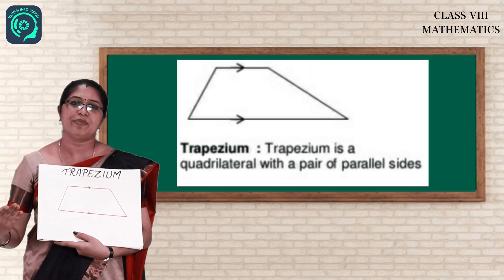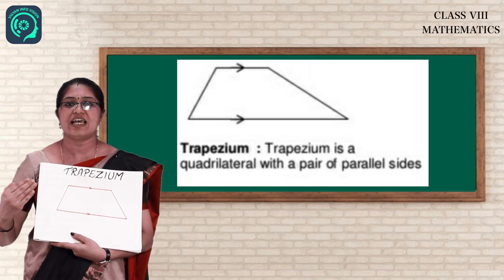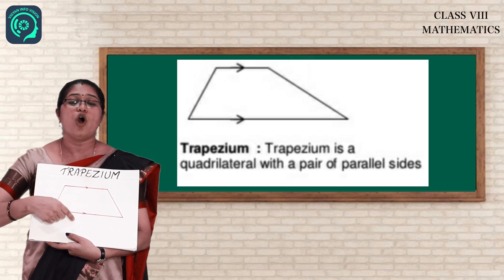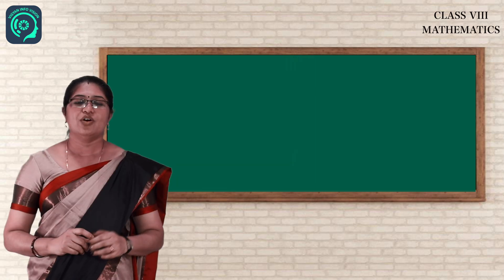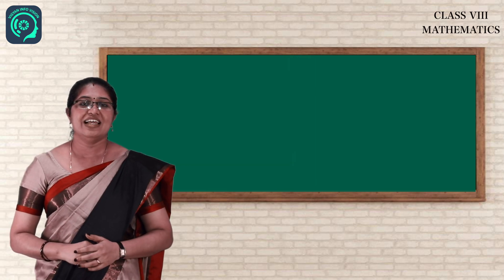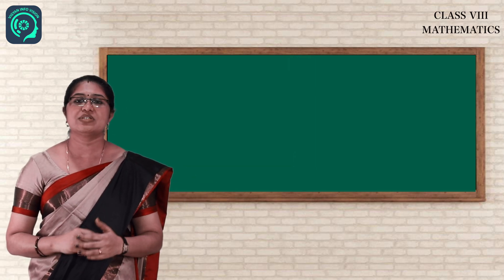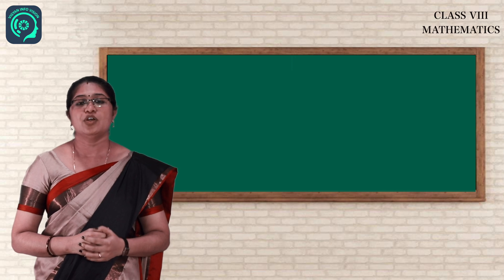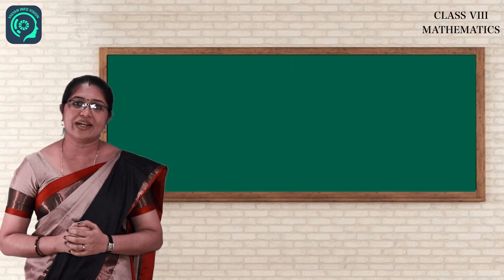Now the next and last quadrilateral — trapezium. There is not much property about trapezium. The only property is that one pair of opposite sides is parallel.